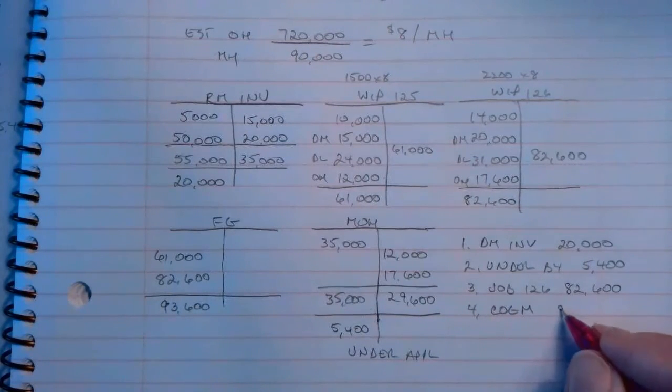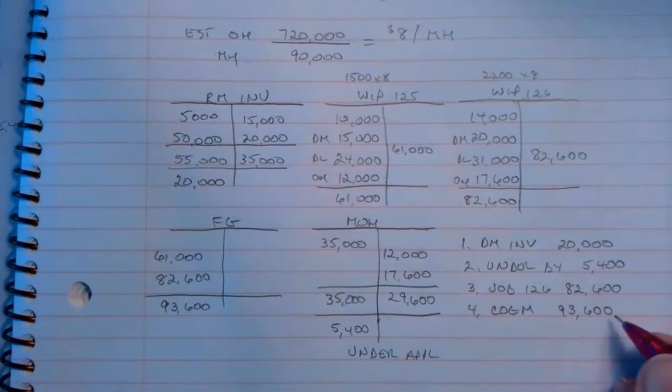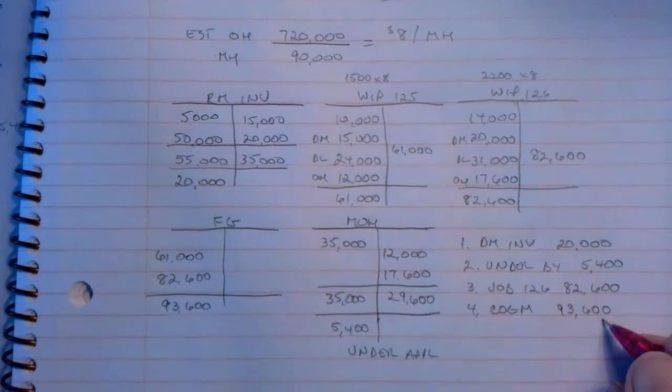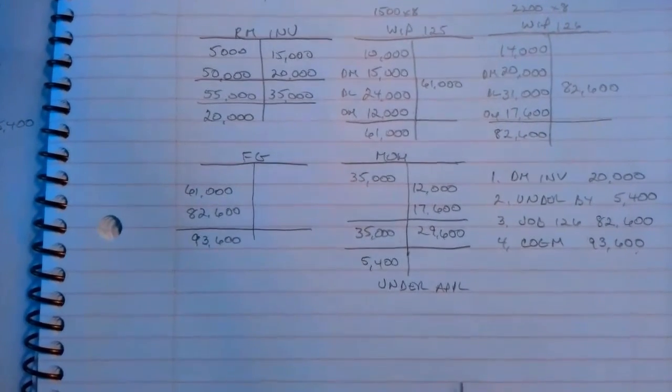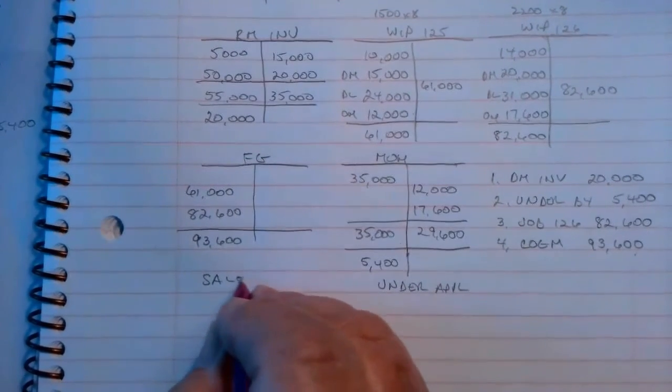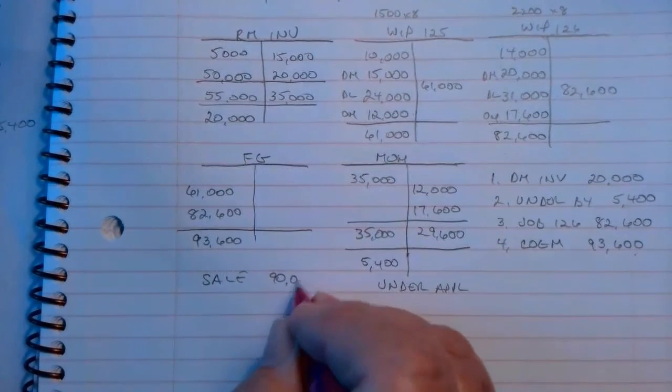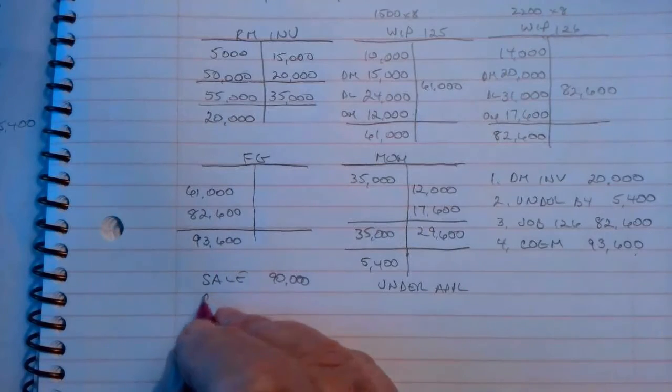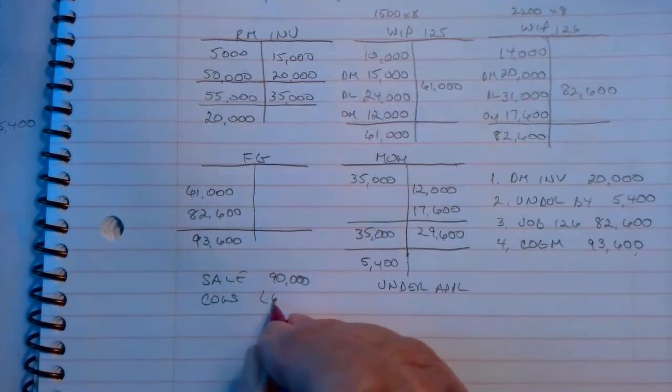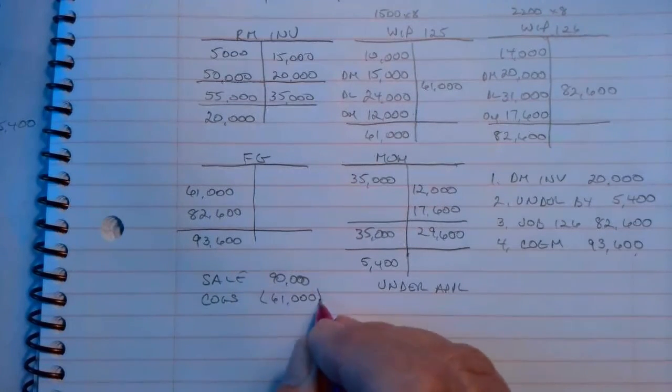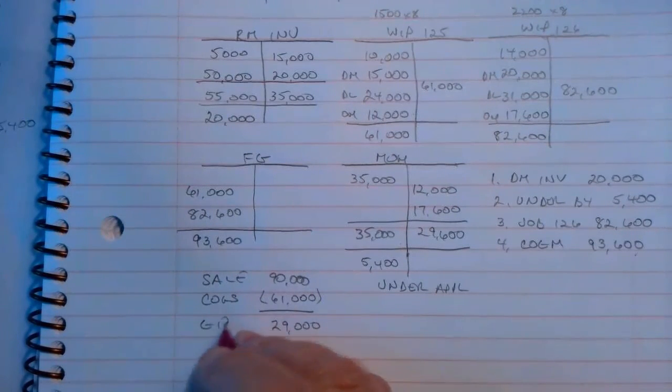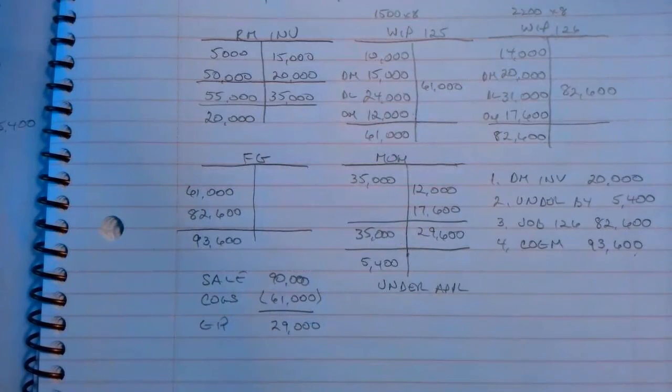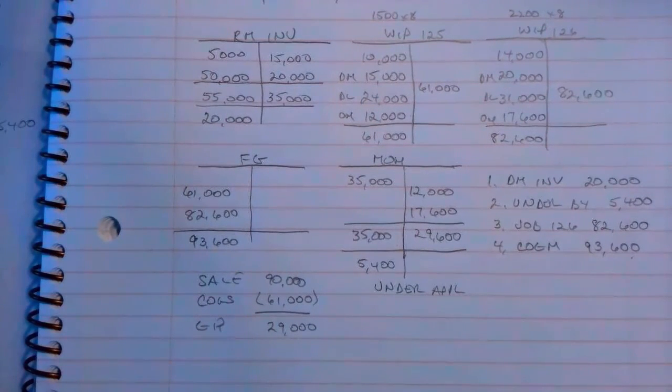In addition to finished goods inventory, assume that Job 125 was sold for $90,000. So we've got a sale for $90,000. This is 125, and cost of goods sold would have been $61,000. Okay, so cost of goods sold for that period would have been $61,000.